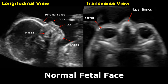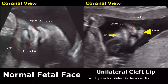The transverse view can be used to view the eyes — these are the orbits. These small structures are the lenses, and these hyperechoic structures are nasal bones. Here is a coronal view in which we can see the nose very clearly, and also the upper and lower lips. This small hyperechoic area is the chin.